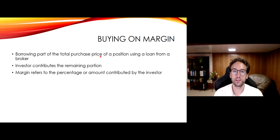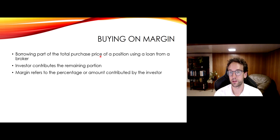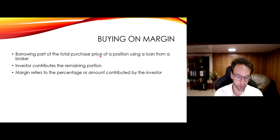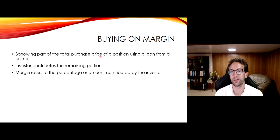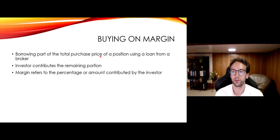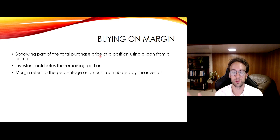Margin refers to the percentage contributed by the investor buying on margin. So when you borrow money to buy more stock than you otherwise could, you profit exceptionally when the stock goes up, but you likewise get slammed extra hard if the stock goes down. If you have $10,000 and you buy $10,000, then borrow another $10,000, you have $20,000 altogether — $10,000 of equity but $20,000 of stock. When the stock moves by 1%, your equity will move by twice that, because the position size is twice your equity.